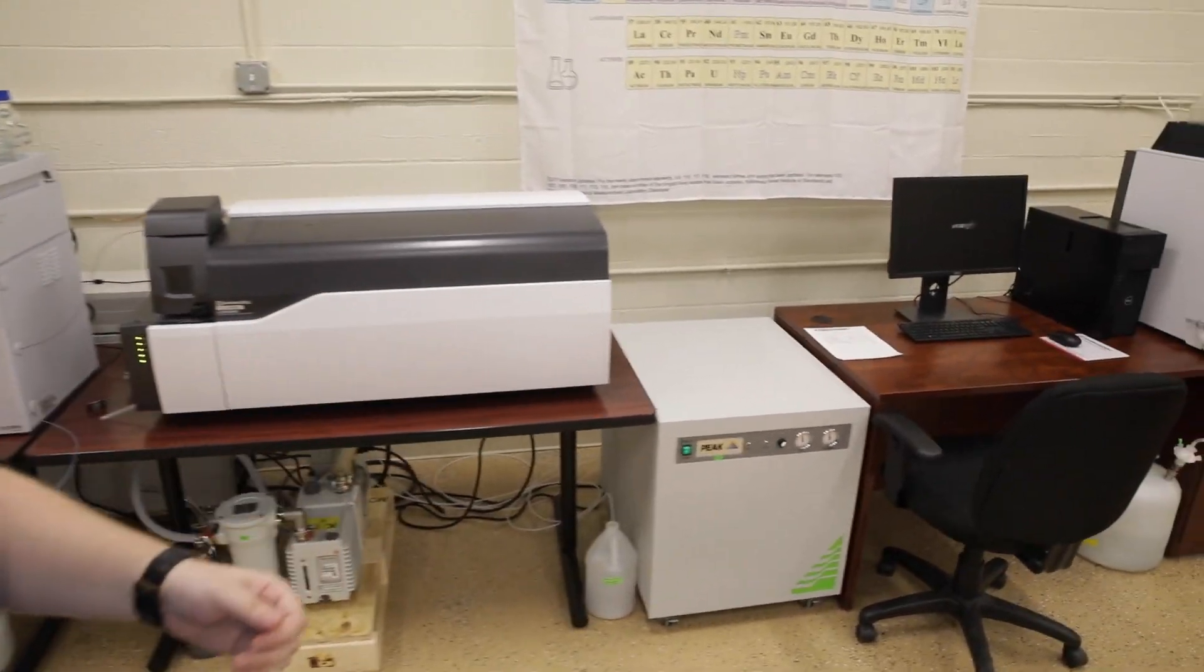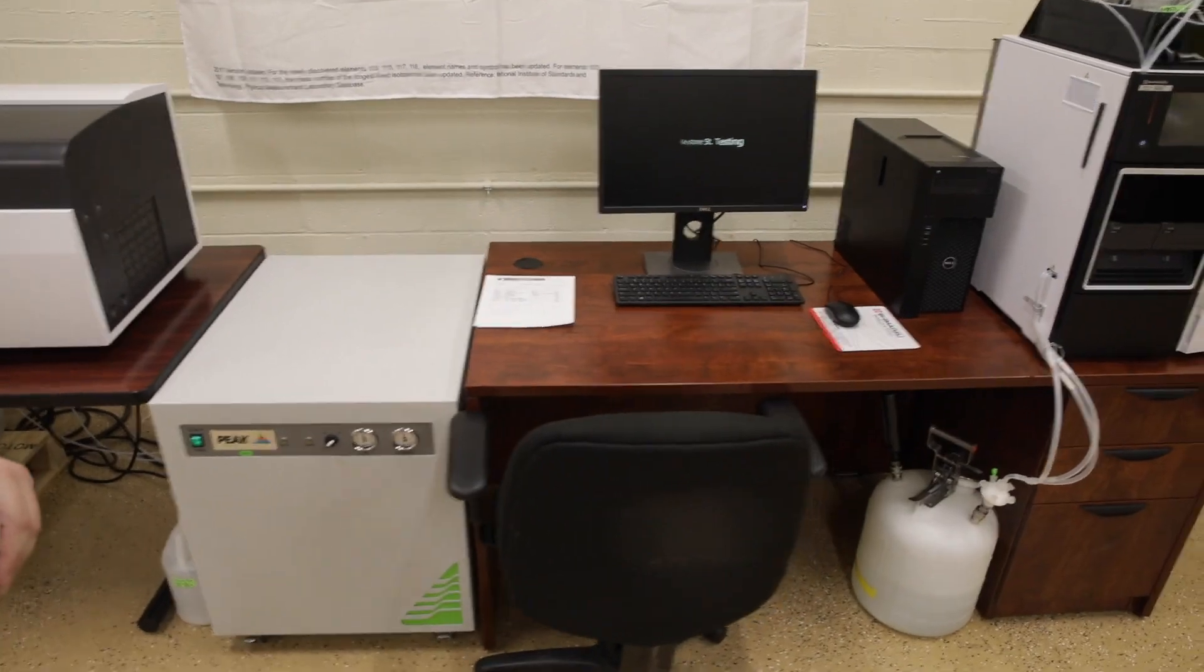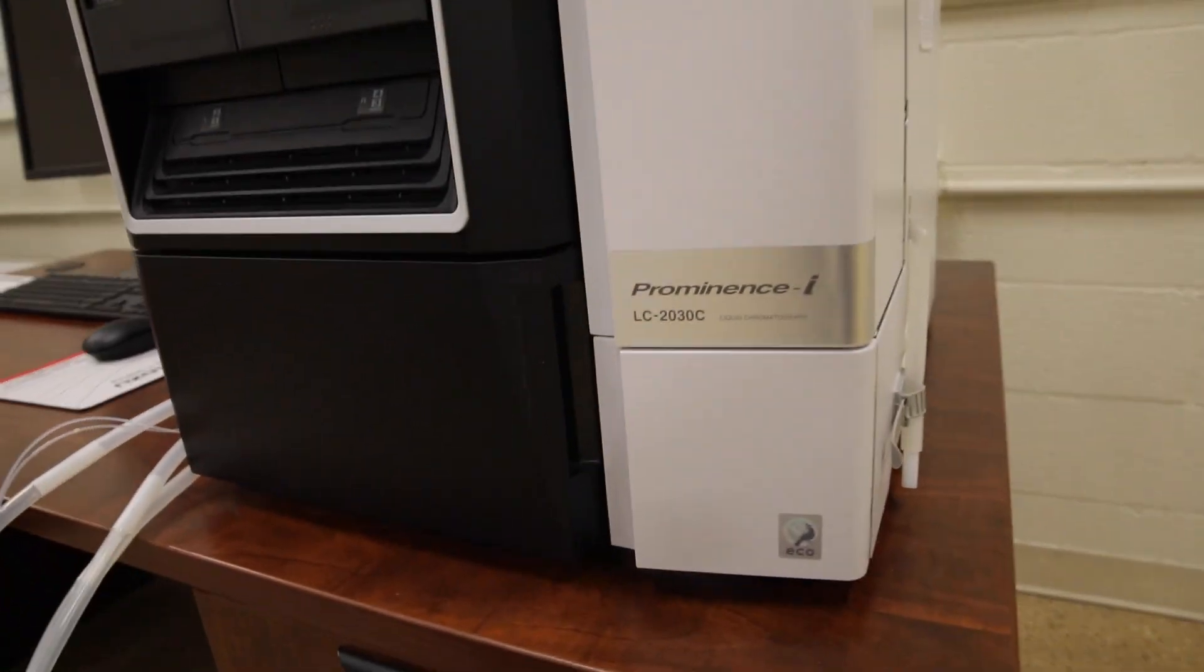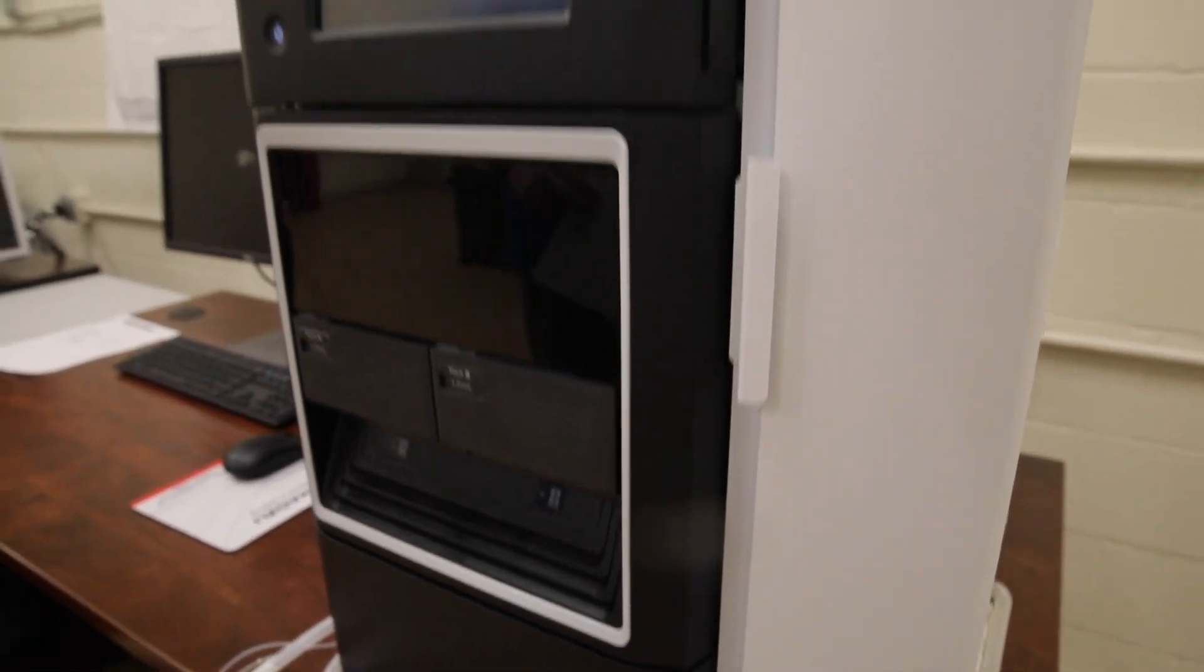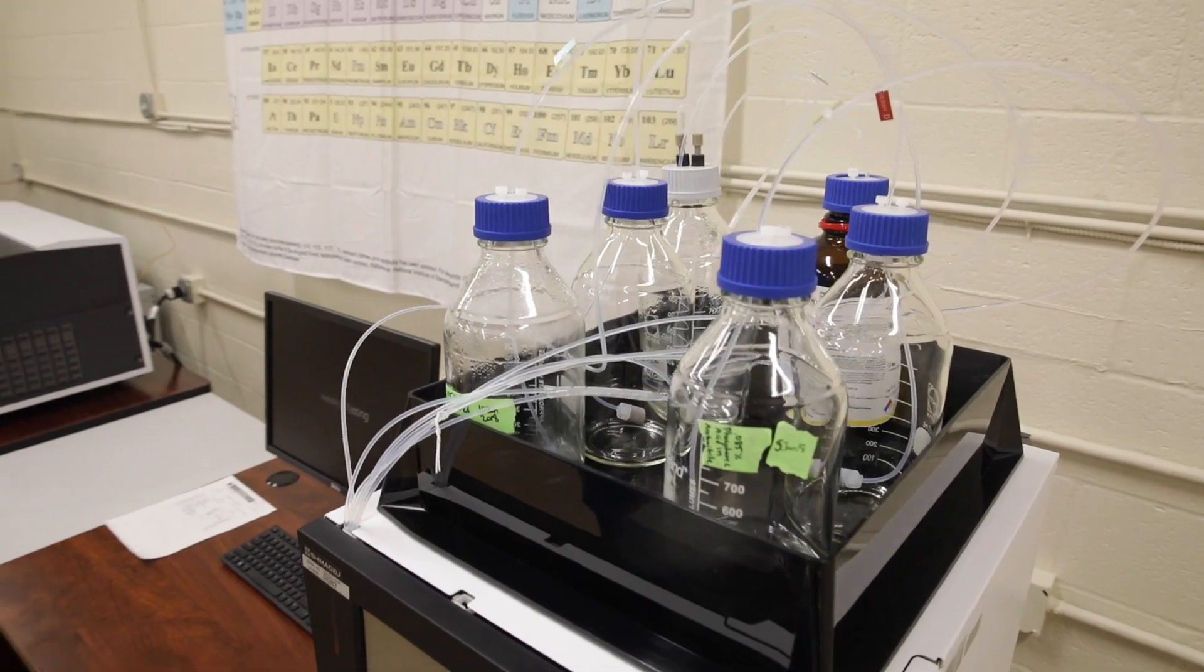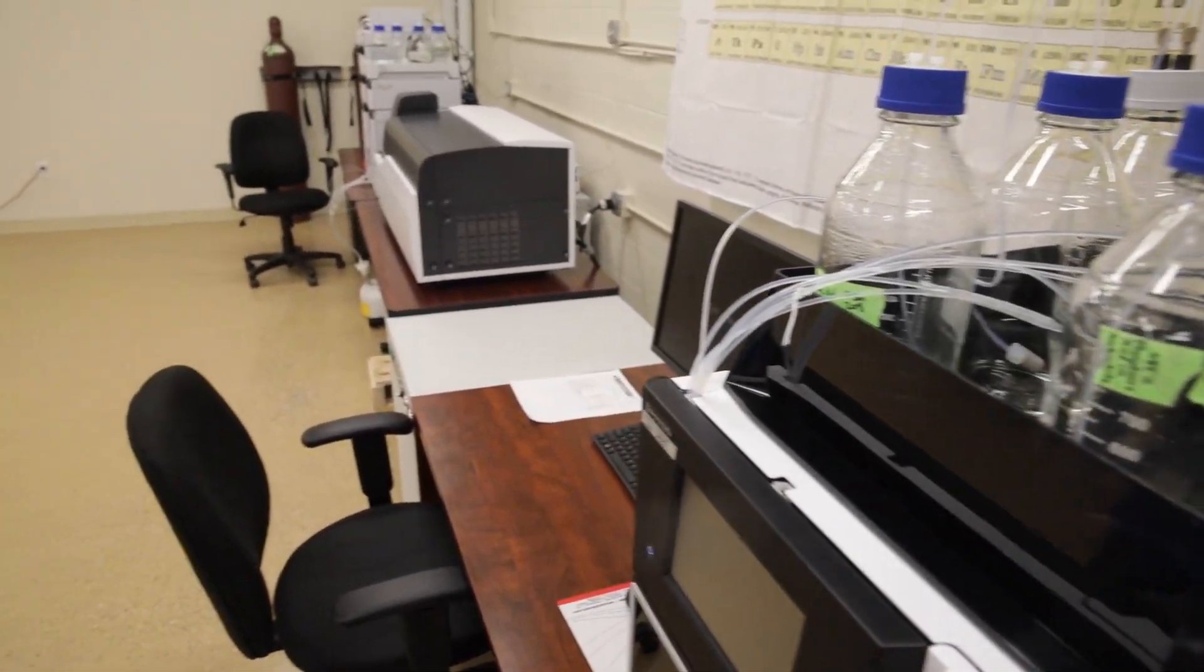Going to this piece of instrumentation, this is our HPLC analyzer. With this piece of instrumentation we will be looking at potency and cannabinoid profile. Here's where we will be looking at THC, THC-8, THC-Delta-9, THC-A, as well as a full cannabinoid profile.